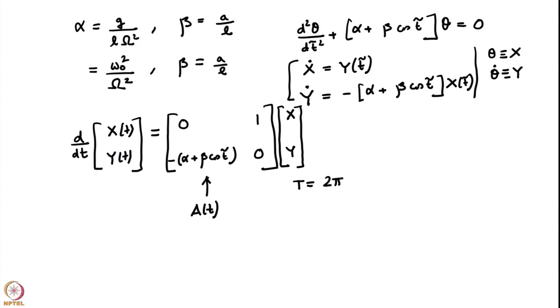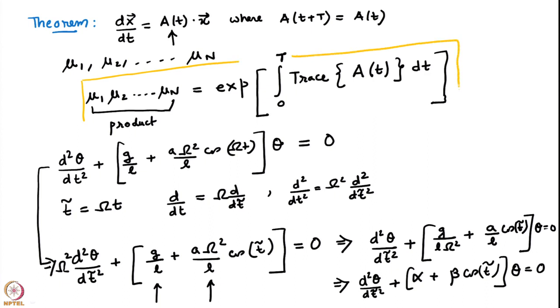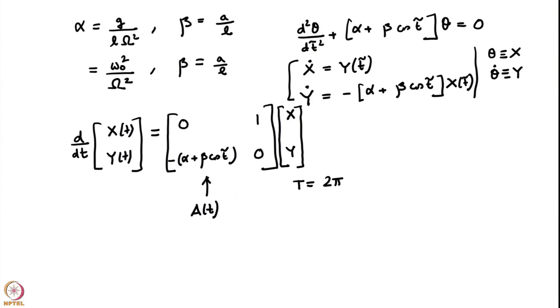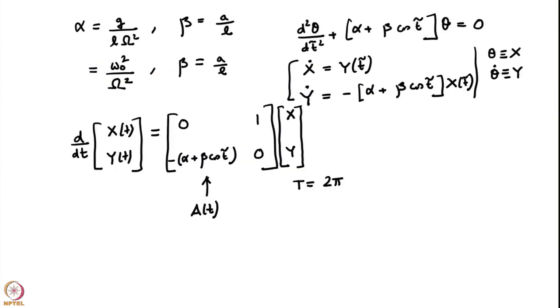Now let us apply the theorems we have encountered. The Floquet theorem says the solution can be written as e^(ρt) times a periodic function with period 2π. The second theorem requires us to compute the trace of A. Notice that the A matrix has trace zero for our Mathieu system, so the integral evaluates to zero, and e⁰ = 1. Since our system is 2×2, we immediately conclude that μ₁ · μ₂ = 1 for the Mathieu system.